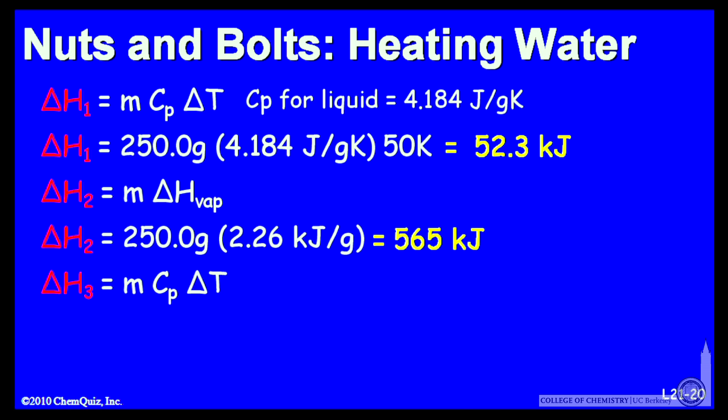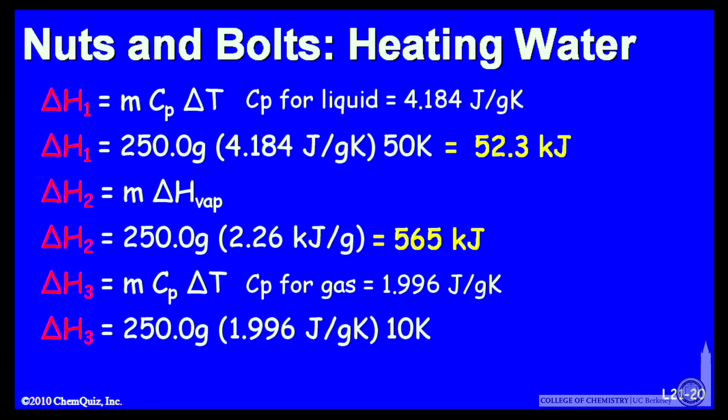The third step is another temperature change. So I need a heat capacity, this time for gaseous water or steam. The heat capacity for gaseous water, around 2 joules per gram degree Kelvin. So 250 grams by 1.996 joules for every gram and degree Kelvin I raise, and 10 Kelvins. So that's 5 kilojoules.